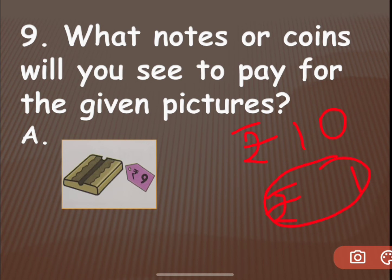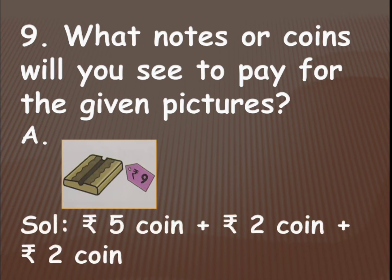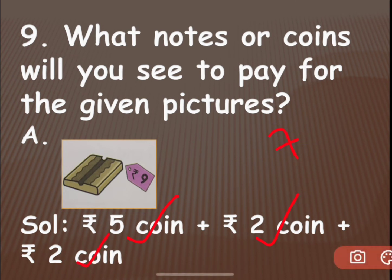For this 9 rupees, you can give a 10-rupee note and you will get back 1 rupee as change. Or else you can use coins: a 5-rupee coin plus a 2-rupee coin plus another 2-rupee coin. So 5 plus 2 becomes 7, and 7 plus 2 becomes 9 rupees.